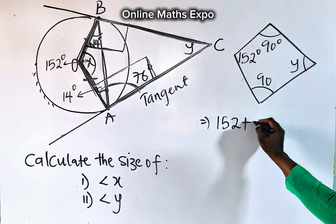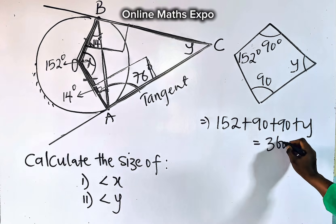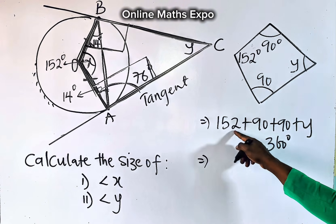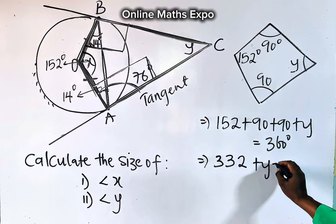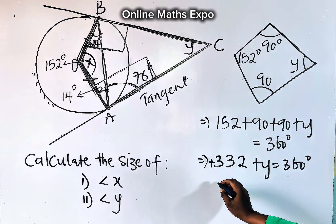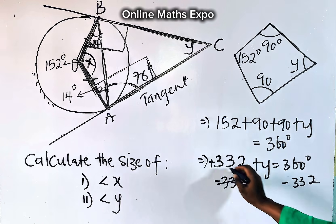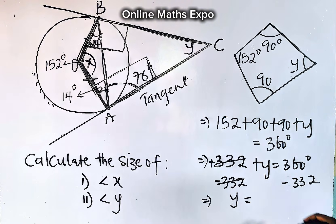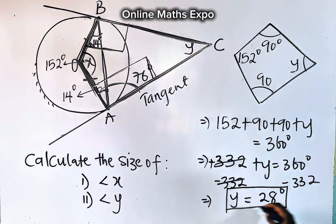So we have 152, add 90, add 90. Then plus y should give us 360 degrees. Now what do you do? Let's add this together. This is 180. Add it to this. It gives you 332 plus y is 360 degrees. So to get y, remove this. We're going to subtract from both sides. So we subtract this from both sides. And when you do that, this goes off. So we are going to have y is when you subtract this, it gives us 28 degrees. So this gives us the value of y.